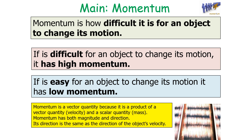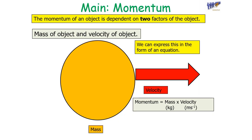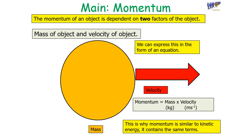Momentum has both a magnitude and a direction; its direction is the same as the direction of the object's velocity. The momentum of an object depends on two factors: the mass of the object and the velocity of the object. We can express this as an equation where momentum equals mass in kilograms multiplied by velocity in meters per second. This is why momentum is similar to kinetic energy — it contains the same terms: momentum is mass times velocity, and kinetic energy is one-half times mass times velocity squared.